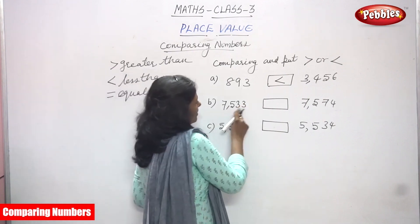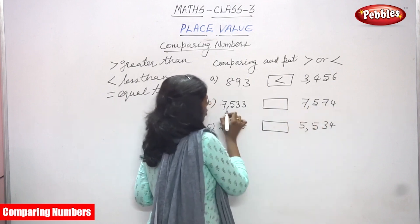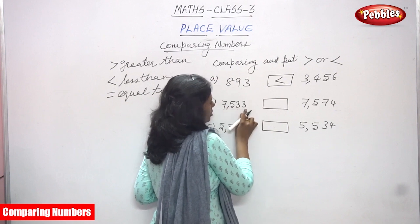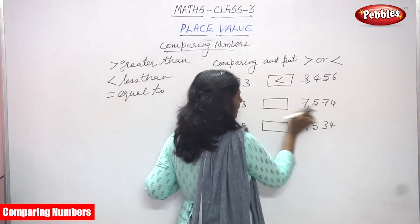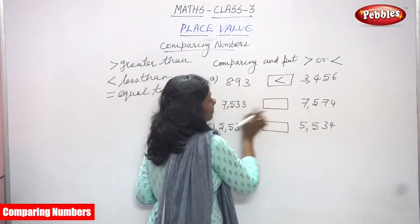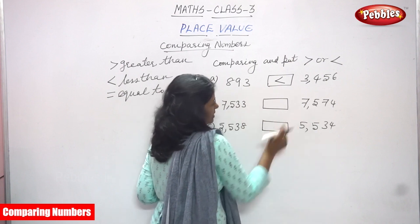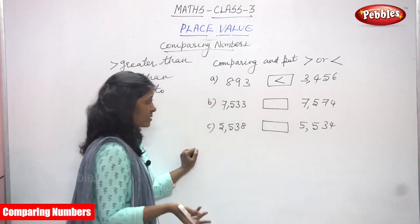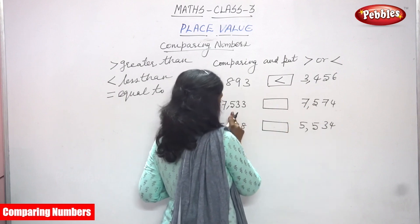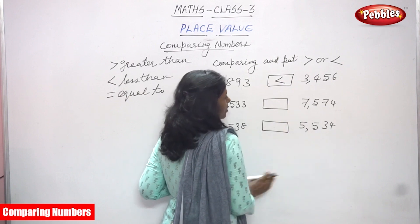Next, 7533 compared with 7574. Both are four digit numbers. First you have to compare the thousands place — both have seven thousands here. So we move to the next digit. This is 500 and this is also 500. In both numbers, the hundreds place is the same.